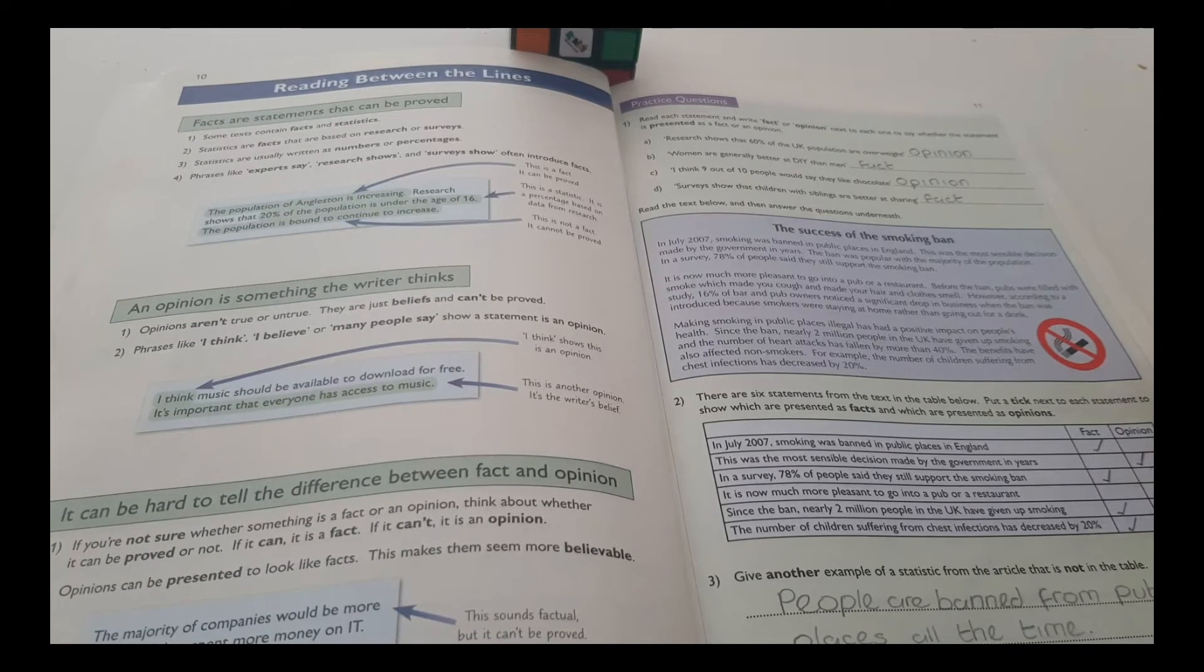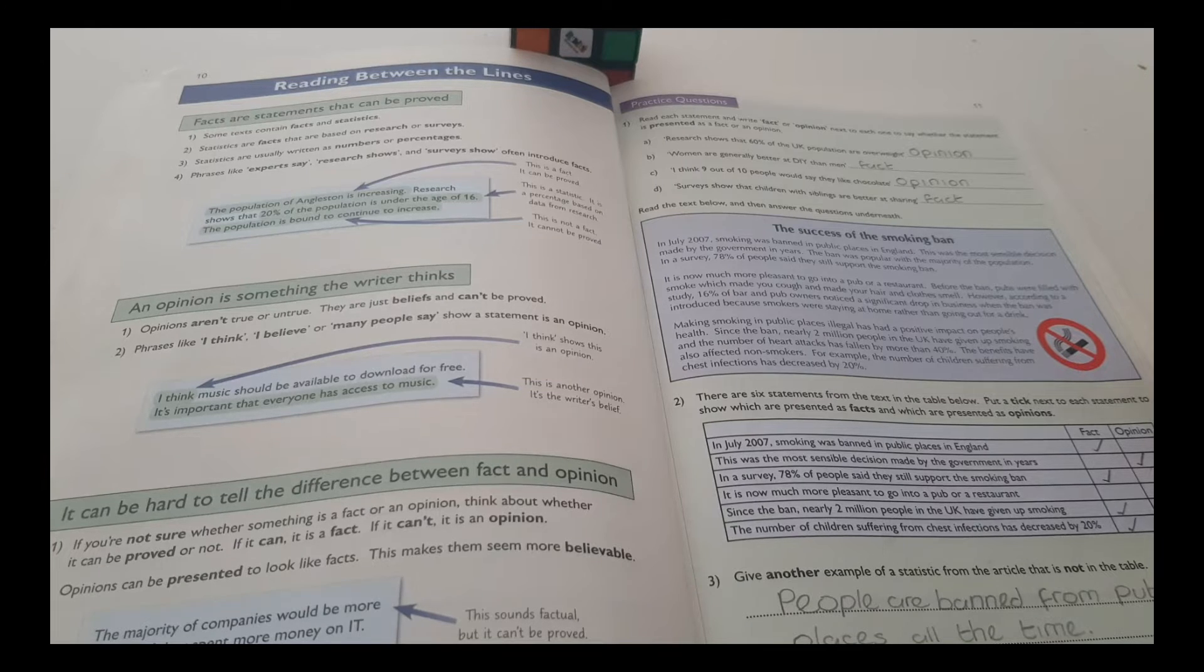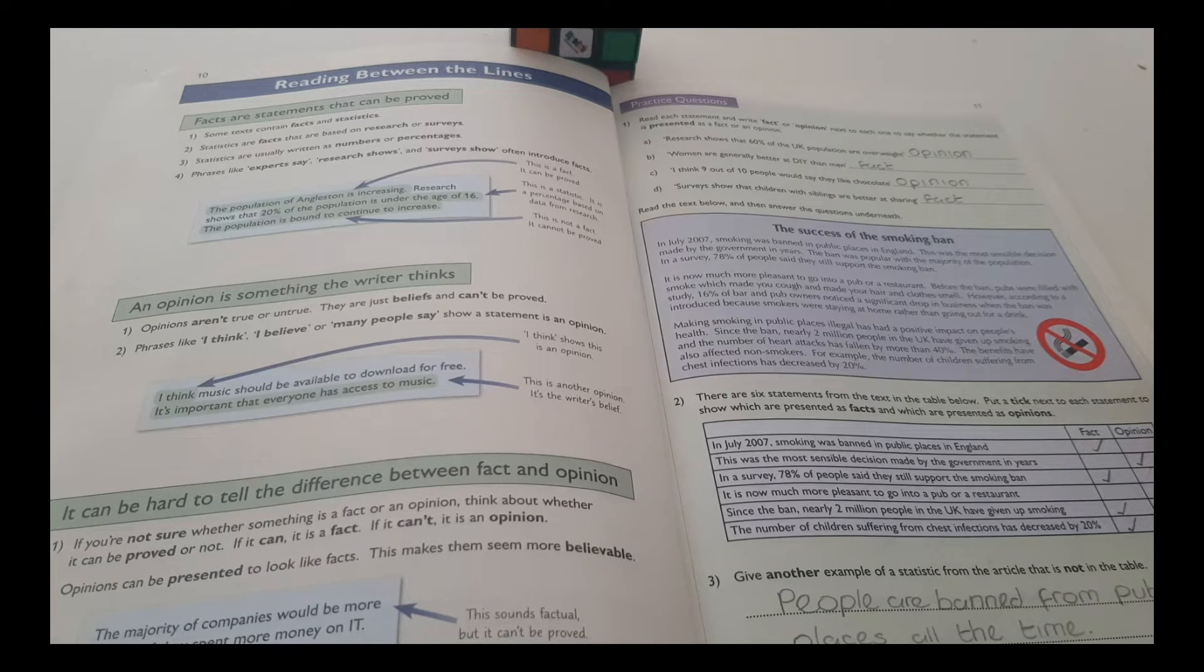An opinion is something the writer thinks. Opinions aren't true or untrue. They are just beliefs and can't be proved. Phrases like I think, I believe, or many people say show a statement is an opinion.